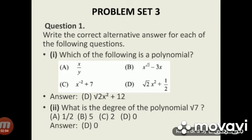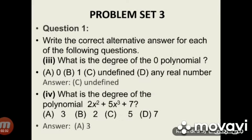The answer is option D, 0. Subdivision 3: What is the degree of the 0 polynomial? The answer is C, undefined, because a 0 polynomial cannot be determined. Subdivision 4: What is the degree of the polynomial 2x squared plus 5x cubed plus 7? The answer is option A, 3, because the highest degree is 3.